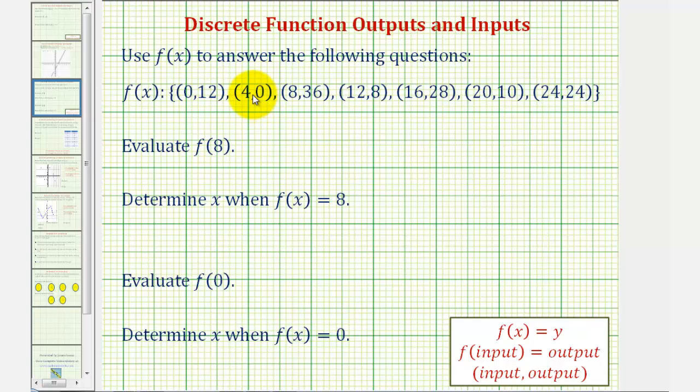When working with functions, it's often helpful to think of f of the input equals the output. So if we have a function of x as we have here, we can say f of x equals y, and therefore x will be the input, and y will be the output. So for each ordered pair, we can think of the input, comma, the output.